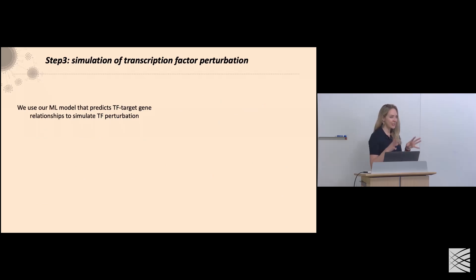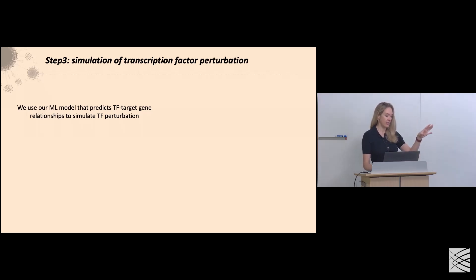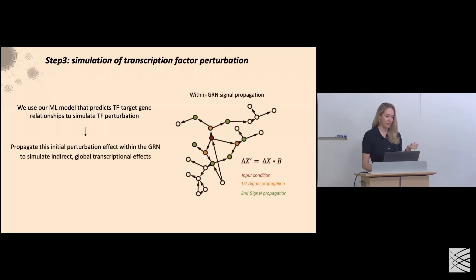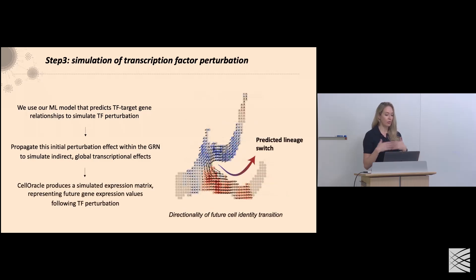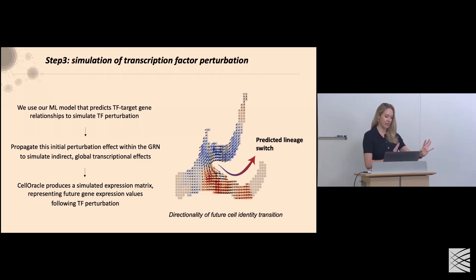In step three — the core and unique creative aspect of Cell Oracle — we use the ML model that predicts target gene relationships to simulate the effects of transcription factor perturbation. We then propagate this initial perturbation within the GRN to simulate the indirect global transcriptional effects. Cell Oracle then produces a simulated gene expression matrix, effectively predicting how cells will shift in identity in response to transcription factor perturbation. The core output of Cell Oracle is these small-scale shifts in cell identity — these vectors.